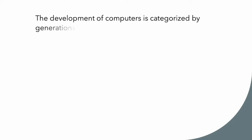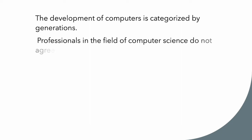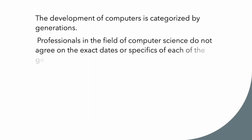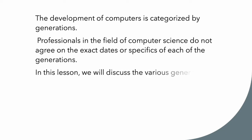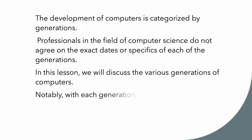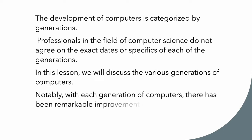The development of computers is categorized by generations. Professionals in the field of computer science do not agree on the exact dates or specifics of each of the generations. In this lesson, we will discuss the various generations of computers. Notably, with each generation of computers, there has been remarkable improvement in hardware, speed, and reliability.